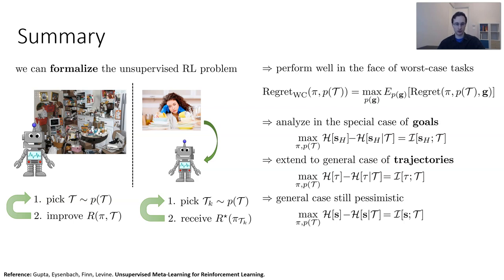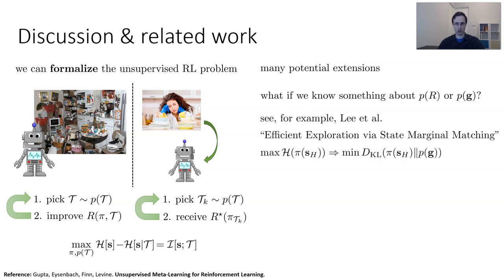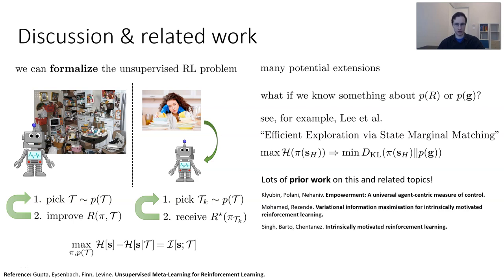There are many caveats — achieving the optimal state or trajectory through random attempts is likely quite intractable. But this basic idea gives us a lot of guidance. There are many potential extensions: for example, if we know something about the tasks the user will select, maybe the distribution over rewards or goals, then instead of maximizing entropy we can match desired distributions, as discussed in the paper Efficient Exploration by State Marginal Matching. There's also quite a bit of prior related work on this topic dealing with things like empowerment, intrinsic motivation, and other similar issues. The basic mutual information framework provides an appealing mathematical way to think about minimizing worst-case regret in the face of arbitrary test-time tasks.